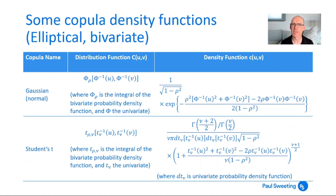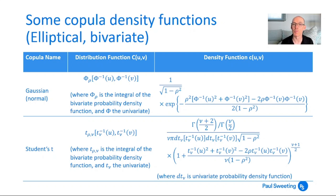For elliptical bivariate copula density functions, you can see the distribution function here. I've used a simplified term in terms of capital Φ or T for the Gaussian and Student's T distributions. The density functions are a little more involved — they should look familiar. The slight complication is that the inputs, if we're working in terms of u and v as uniform distributions, need to be transformed into the language of the copula. For example, in a Gaussian copula we need to apply an inverse normal function to our uniform distribution to turn it into a normally distributed variable, and something similar for the T distribution. So these copula density functions get quite lengthy.